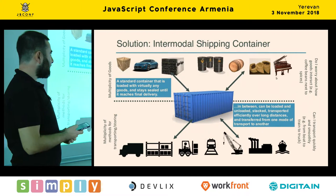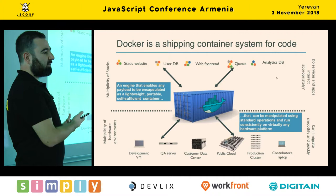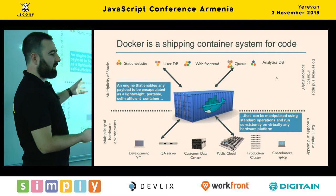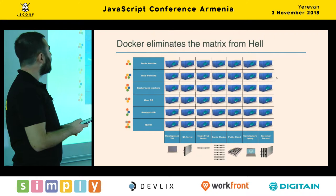Then they came up with the same concept for actual applications. You have all your different websites, your front end, your DB — you put it inside a container. And then all the different providers know how to run the container, and it's always the same thing. It doesn't matter if it's in the cloud, on your machine, or even a Raspberry Pi. You don't get the matrix from hell — it's the same Docker image everywhere.